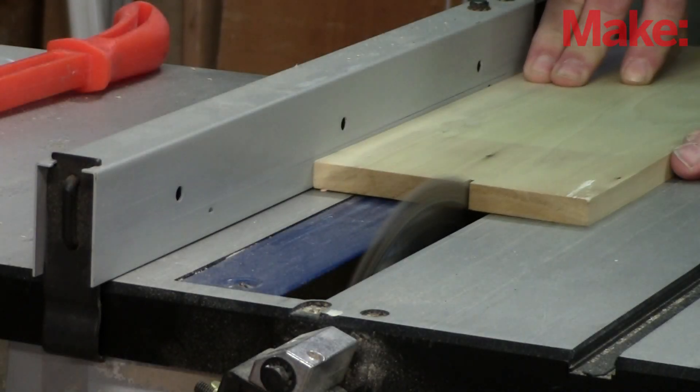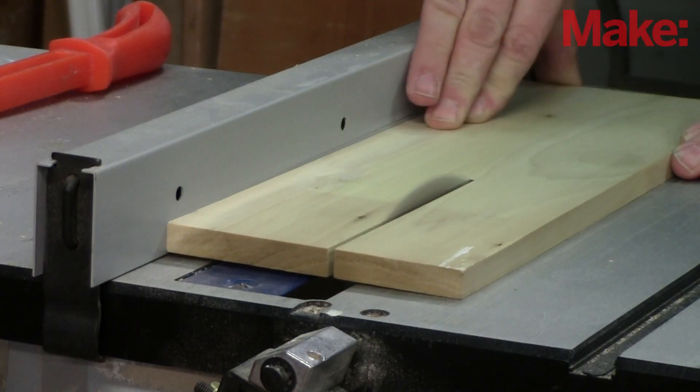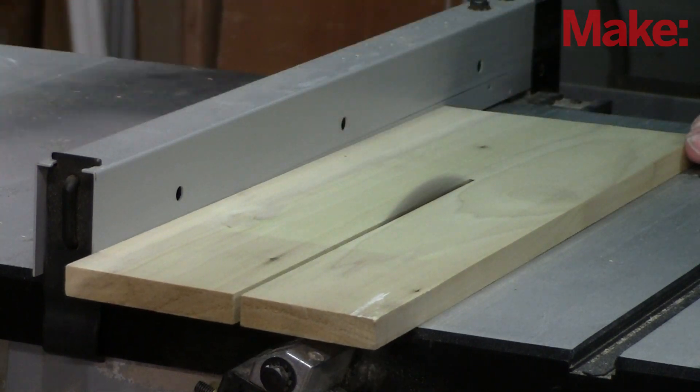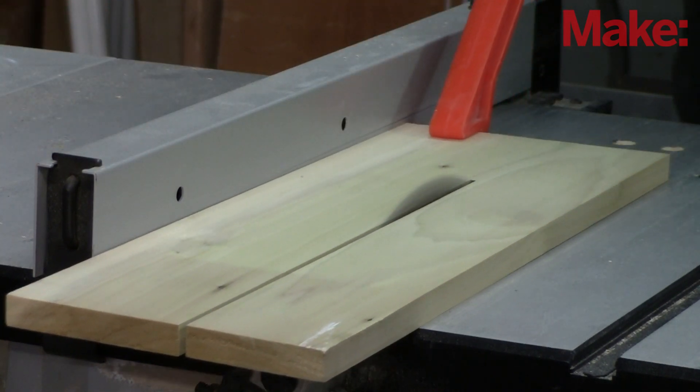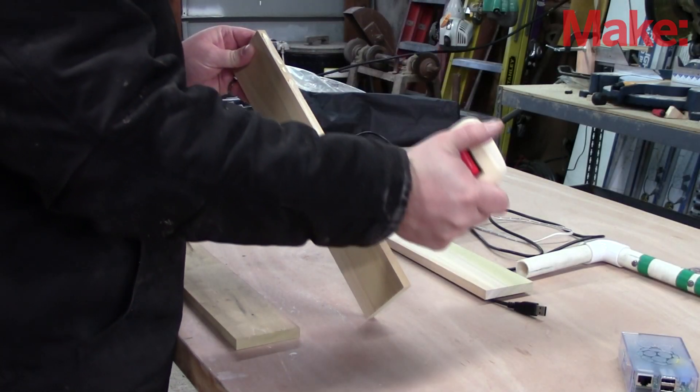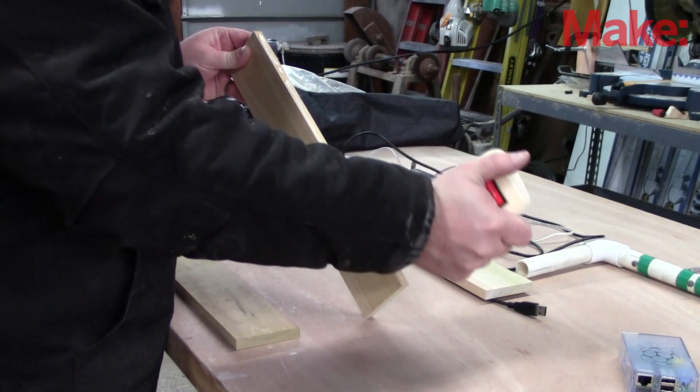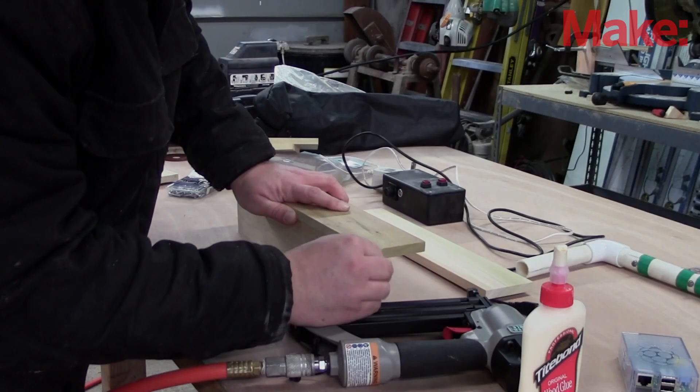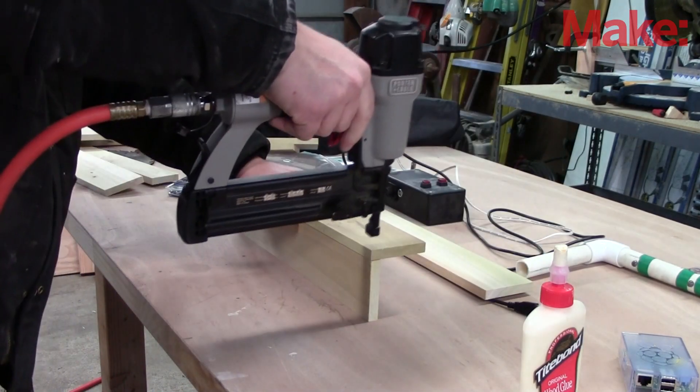I then use my table saw to cut them to width. This is measured to include the electronics at 3 inches. I'll make the height the same. Using some wood glue on each of the mating surfaces and then brad nailing them together, I complete the gantry.